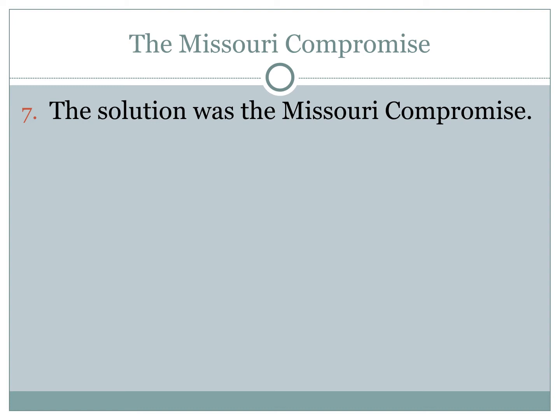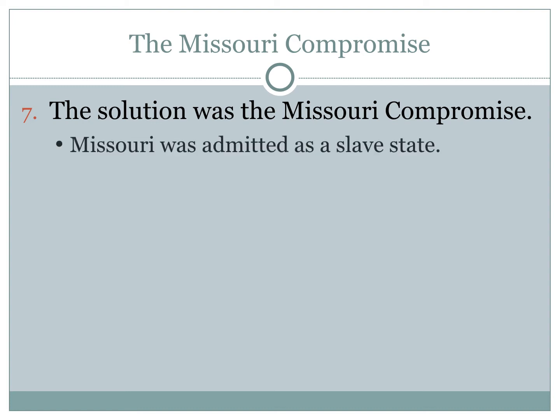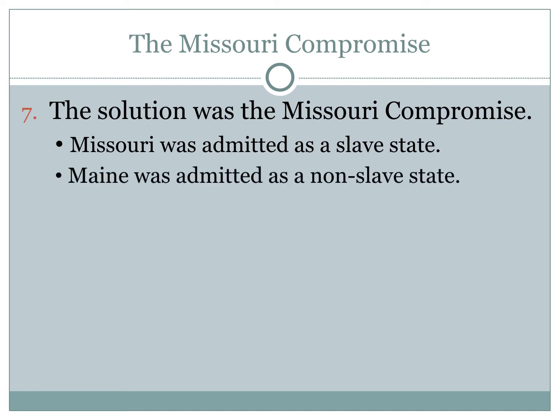The Missouri Compromise had several parts. First, Missouri was admitted as a slave state, so the South added one more slave state to the Union. However, to balance out the addition of Missouri, Maine was also added to the Union as a non-slave state. So the number of slave states and non-slave states remained equal.